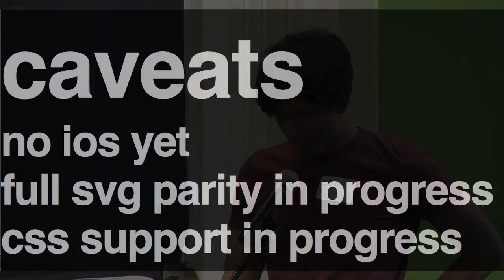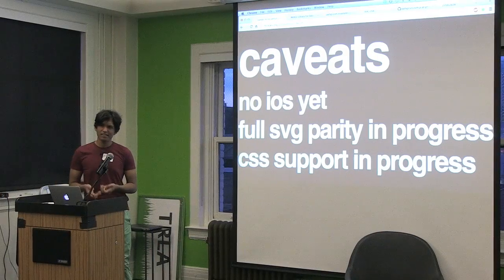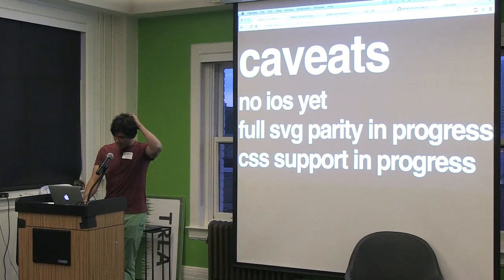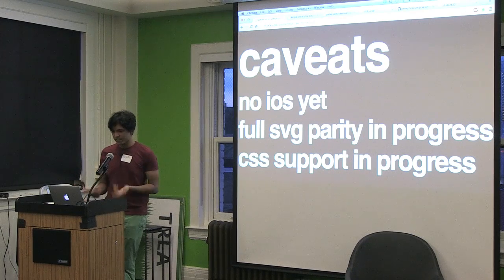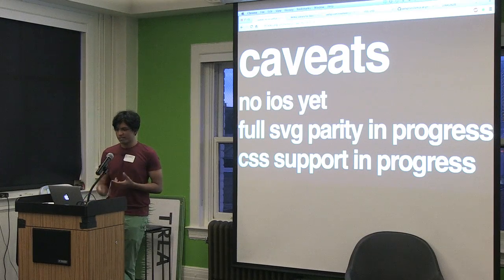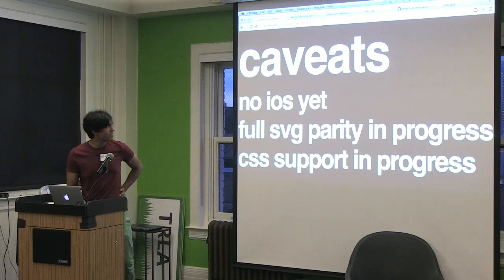There's no iOS support for WebGL, which kind of sucks. SVG support is coming but not quite there yet — a lot of attributes are missing, but that's all documented. CSS support is in progress: it works if you have CSS inlined in a style tag, but not for off-location stylesheets.